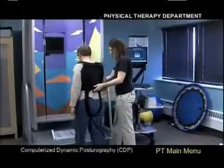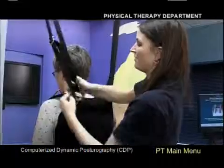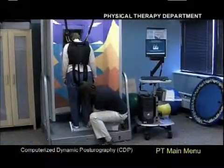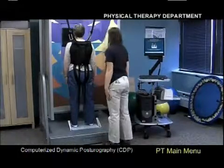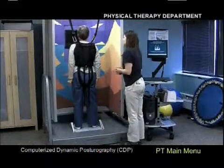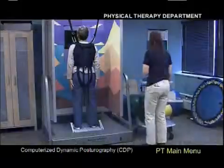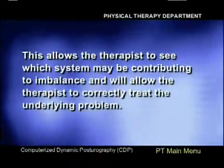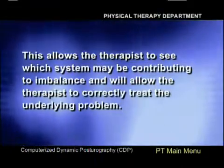In the sensory organization test, there are six different conditions in which the therapist will perform two to three trials of each condition. For two of the conditions, the patient is asked to close their eyes while maintaining balance. This test simultaneously evaluates the three sensory systems that contribute to balance, allowing the therapist to see which system may be contributing to imbalance and to correctly treat the underlying problem.